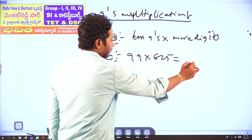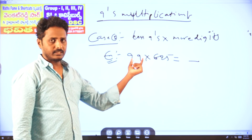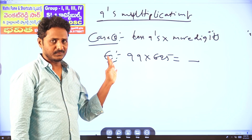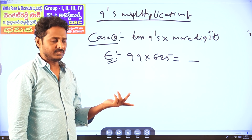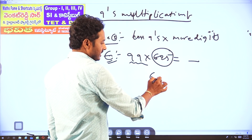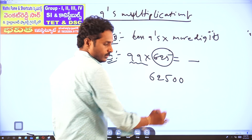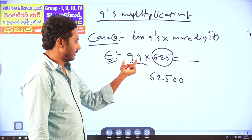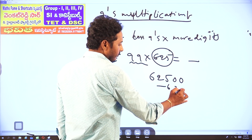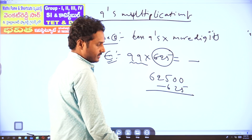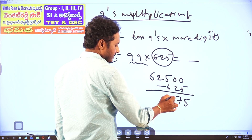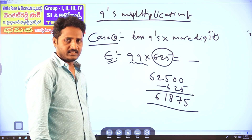Case 3: less nines into more digits. For example, 99 × 625. Here 99 has 2 nines but 625 has 3 digits — fewer nines, more digits. Write 62500, then subtract the original number 625. 62500 minus 625 equals 61875. So the answer is 61875.